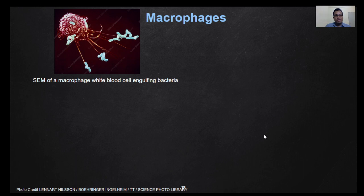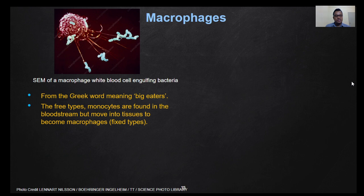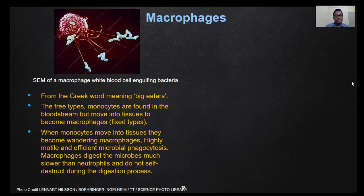The second type of phagocytes are macrophages. Here we can observe an SEM image of a macrophage engulfing bacteria using its cytoplasmic extensions. They come from the Greek word meaning 'big eaters.' There are three types: monocytes found in the bloodstream, fixed macrophages found in the tissues, and when monocytes move into tissues they become wandering macrophages. They are highly motile and efficient at microbial phagocytosis.